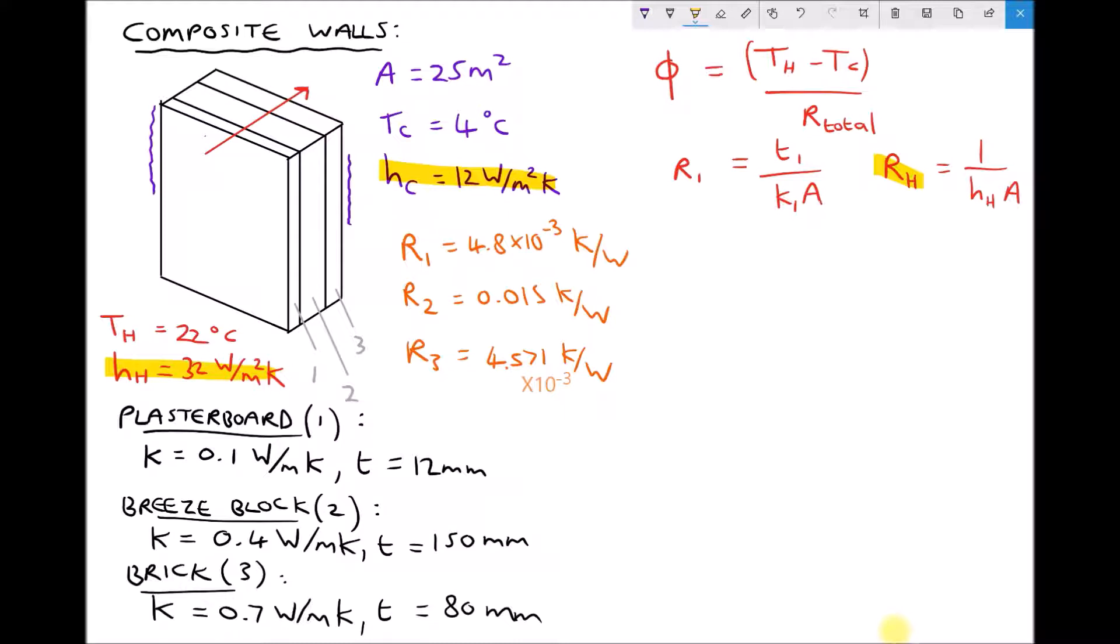Now hopefully you'll recall from the previous video that the way that we calculated our total thermal resistance was by adding up the thermal resistance for each of our layers 1, 2 and 3. Now we can continue this method because if we work out the resistance coefficient for our thin layer of air on the inside of the building and we work out our resistance coefficient for the thin layer of air outside the building then what we can do is just add that to the totals that we had previously. So I'm not going to go through the process of calculating R1, R2 and R3 again for the conduction through the three layers of our composite slab. These values have been taken from the previous video. So the thermal resistance of the plasterboard was 4.8 times 10 to the minus 3. The thermal resistance of the breeze block was 0.015. And the thermal resistance of the brick was 4.571 times 10 to the minus 3.